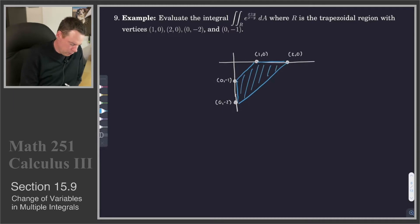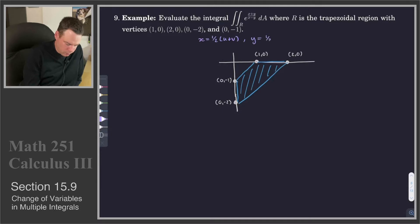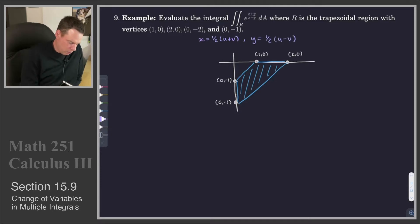We also have the change of variables, where x is equal to one half u plus v and y is equal to one half u minus v. So that was our change of variables, and this is in x, y coordinates.